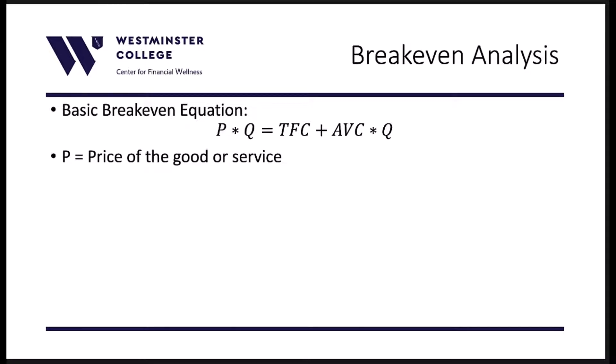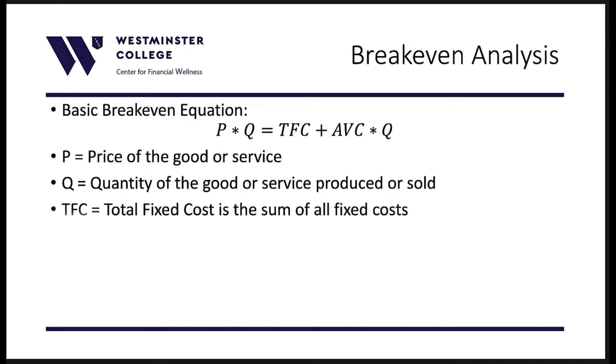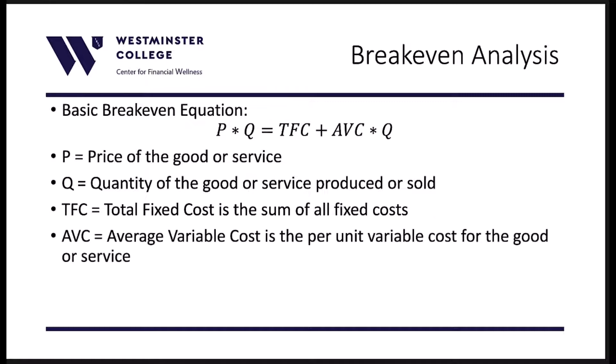In this equation, P is the price, Q is the quantity, TFC is the total fixed cost — that's all the fixed costs for this item — and AVC is the average variable cost per unit.